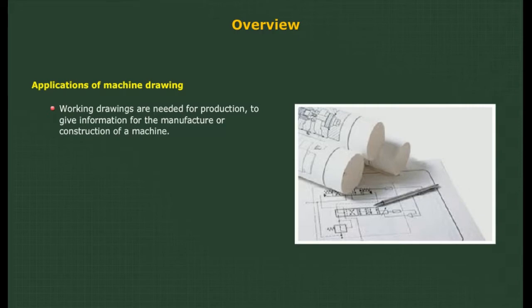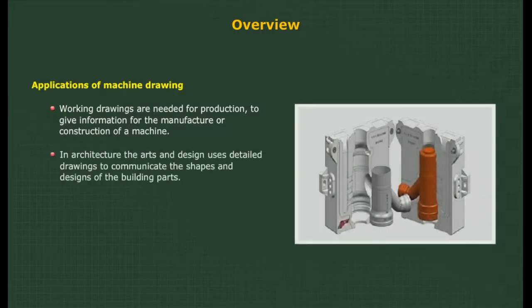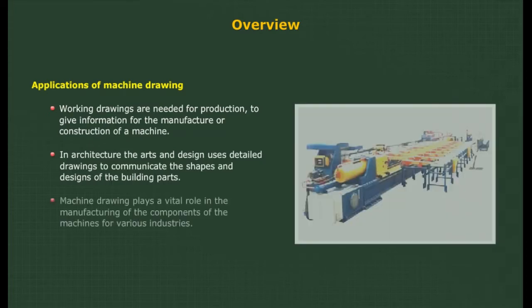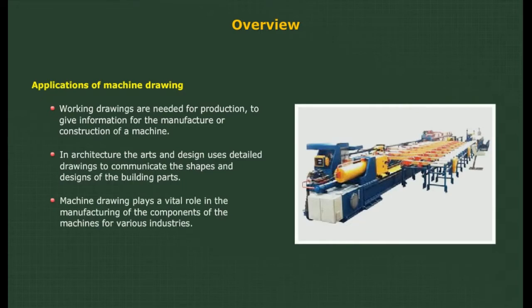The application of machine drawing: working drawings are needed for production to give information for the manufacture or construction of a machine. In architecture, the arts and design use detailed drawings to communicate the shapes and designs of building parts. Machine drawing plays a vital role in the manufacture of components of machines for various industries.